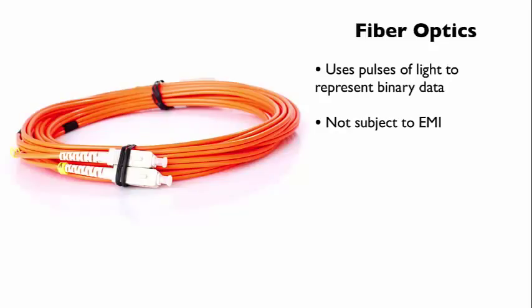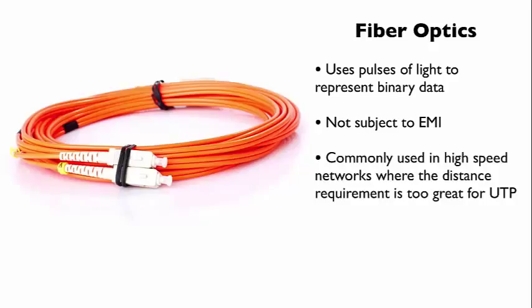And fiber optic cabling tends to have a longer range. It can reach further distances than unshielded twisted pair. For example, let's say that we have a campus environment, and we're trying to connect buildings around a college or a business campus. If the distance between the buildings exceeds 100 meters, that might be a great fit to use fiber optic cabling.